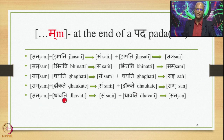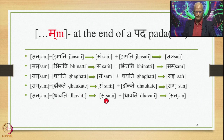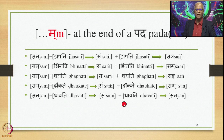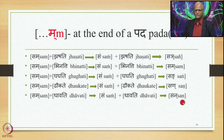Sam plus Dhawati: Ma at the end of a pada is substituted by Anuswara by 8.3.23, giving Sam Dhawati. Then 8.4.59 substitutes this Anuswara by the nasal Parasavarana of Dha, which is Na, giving Sam Na Dhawati optionally. The other optional output is Sam Dhawati (with Anuswara).